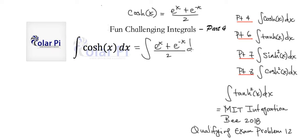And so then we can say that this is equal to first factor out one half and then write integral, and then it's e to the x plus e to the negative x dx.